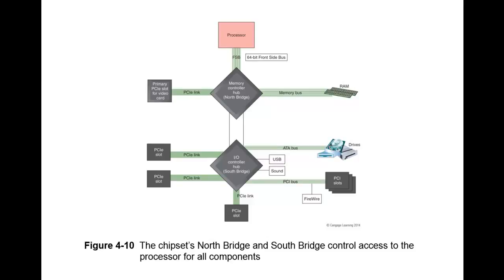We also have the Sandy Bridge chipsets, where the memory and graphics controller are in the processor. Whereas in the previous architecture those were both handled by the Northbridge, Sandy Bridge uses a single chipset hub called the Platform Controller Hub. In this hub, it controls things like the PCI Express card, SATA, high-def audio, USBs, and Ethernet — handled on that platform controller hub rather than a Southbridge hub.